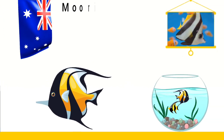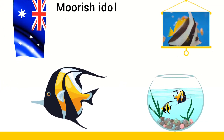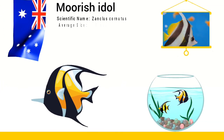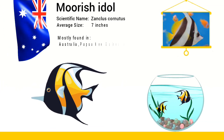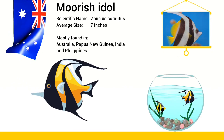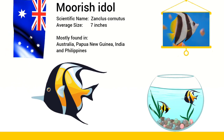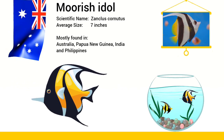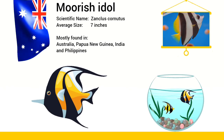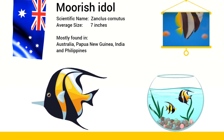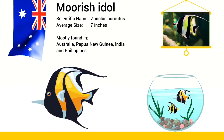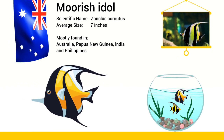The Moorish Idol is one of the most widespread fish. It can be found throughout the Indian Ocean, Red Sea and all of the tropical Pacific.